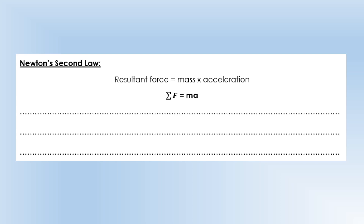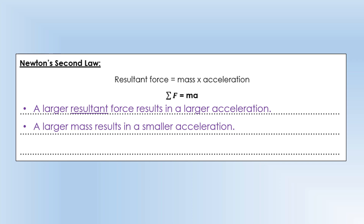We can put these things together into what we call Newton's second law. It says that the resultant force is equal to mass times acceleration. The symbol used for resultant force is sigma with an F, meaning the sum of all the forces. We've got m for mass in kilograms, and acceleration in metres per second squared. You can see that if you have a larger resultant force, that gives a larger acceleration; and if you have a larger mass for the same force, that gives a smaller acceleration.